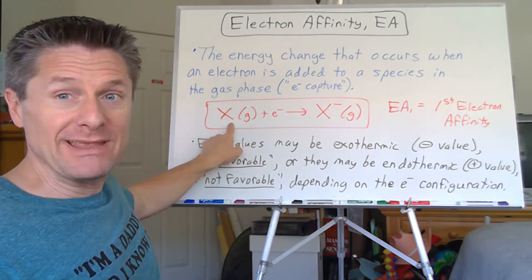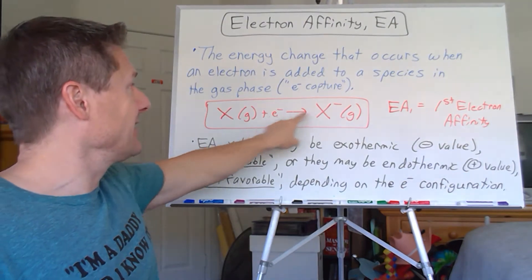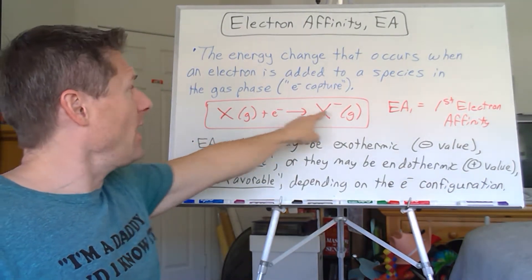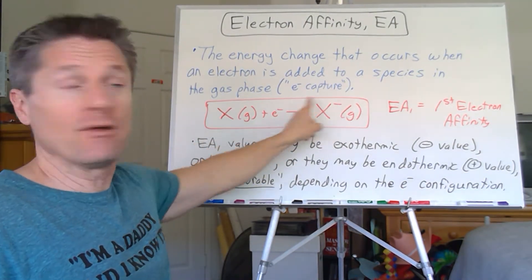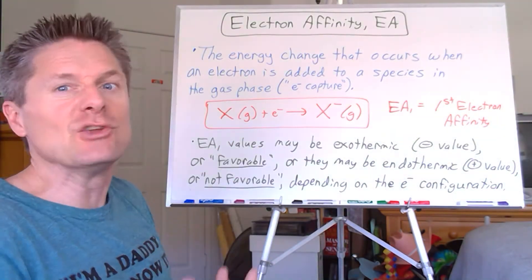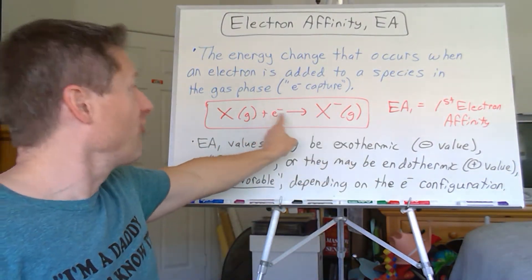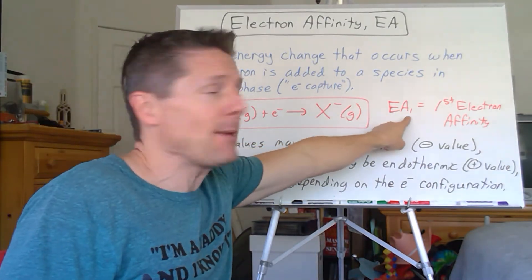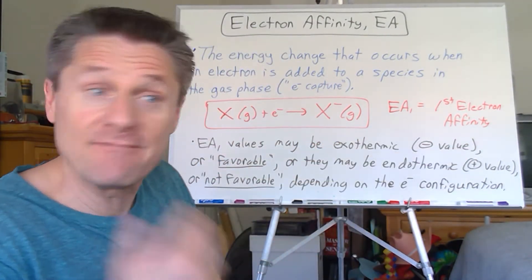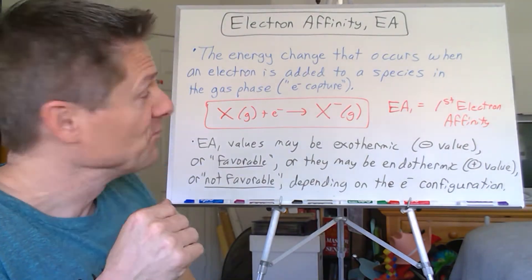So whatever that species is — in this case it happens to be neutral — gains an electron. But if it was a negative one, it would become negative two. If it was a positive two, it would become a positive one. You're just reducing the overall charge by one in the gas phase. So the first electron captured is EA sub one, or the first electron affinity. It parallels ionization energy exactly.